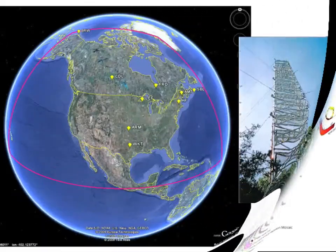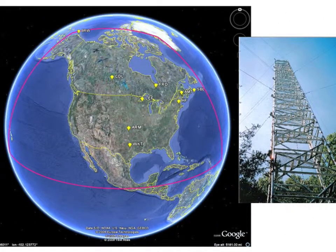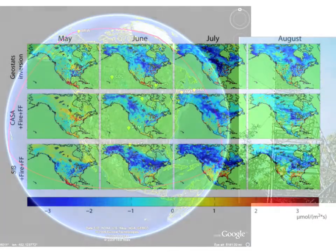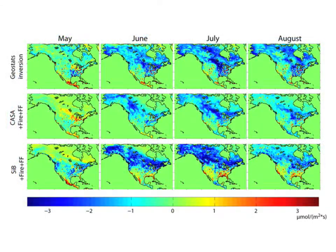In my current project, we estimate carbon exchange across North America for 2004 at a 1x1 degree lat-long resolution using atmospheric measurements from nine retrofitted cell phone towers. These towers, which range in height from 30 to 450 meters, sample continuously throughout the day, providing a different view of regional carbon exchange every time the winds shift direction. We then compare the estimated sources and sinks from our model, shown here for four months in 2004, to estimates from mechanistic process-based models.